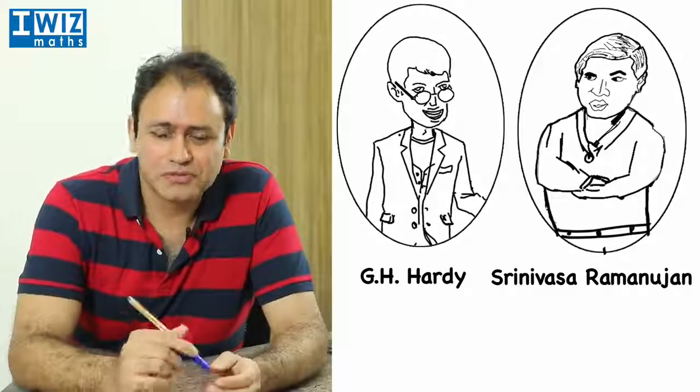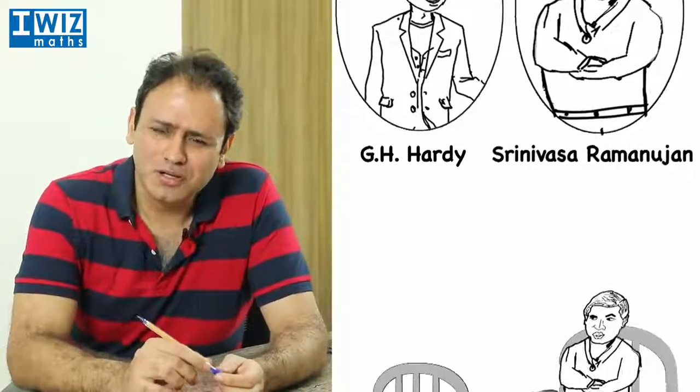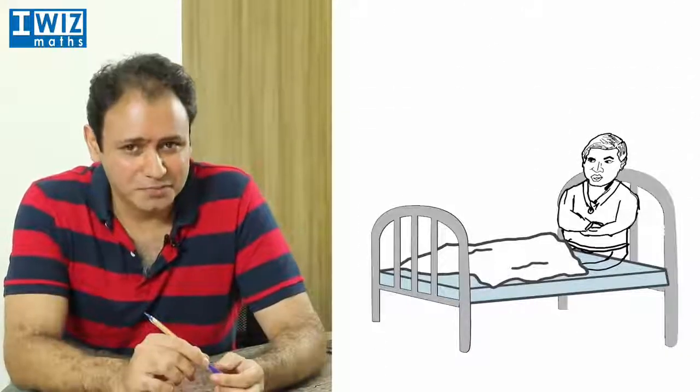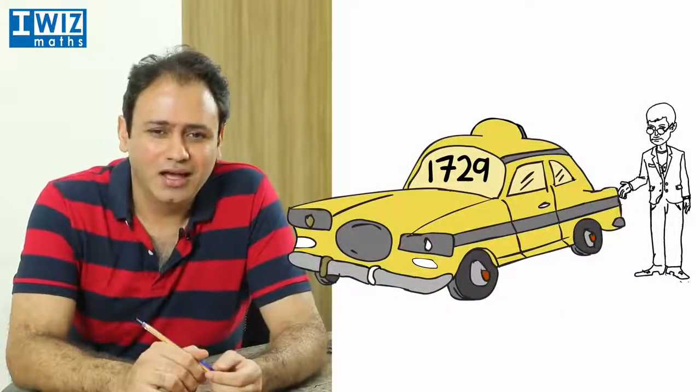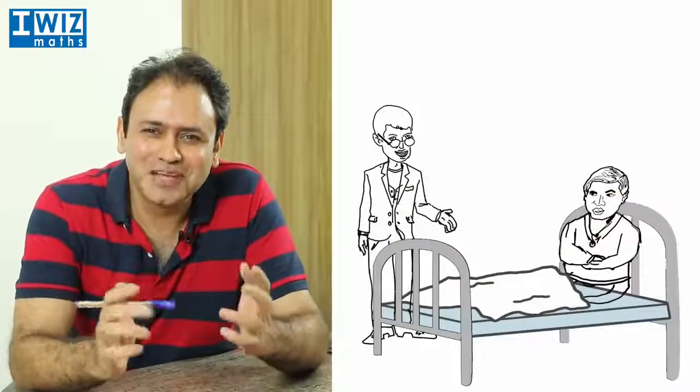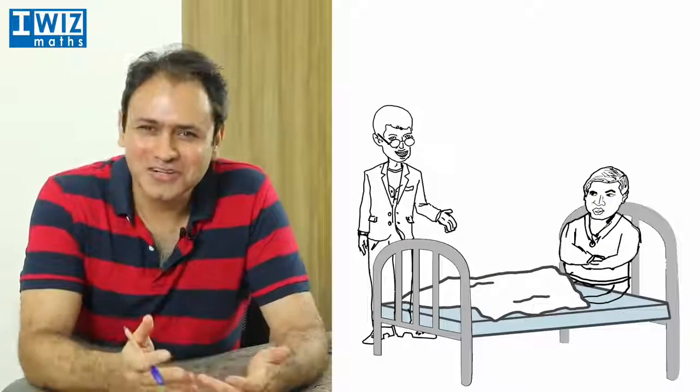So both of them were working at Cambridge and Ramanujan was not well. He ended up in hospital. So G.H. Hardy goes to visit him. And Hardy catches a taxi. So when he gets there, of course, you've got two mathematicians together, of course they'll talk some numbers, of course they'll talk some math.